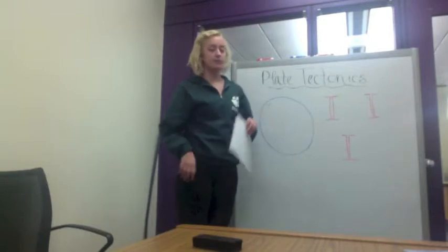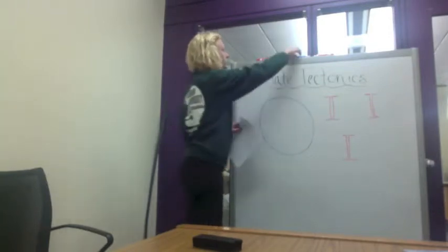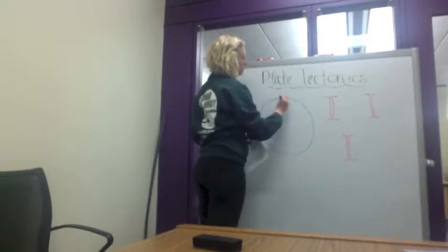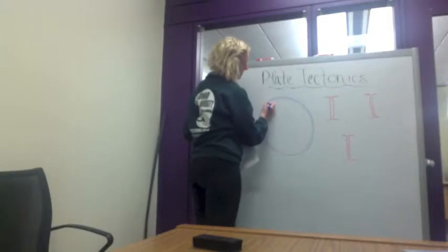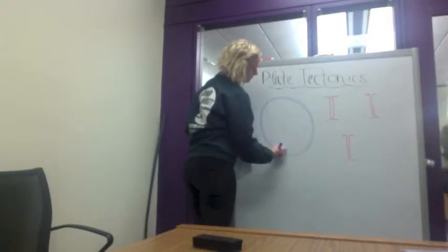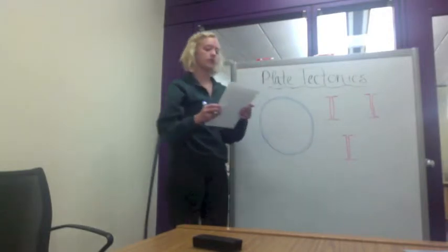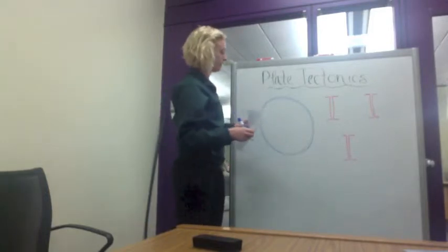First we'll start by discussing the layers of Earth, of which there are four. The outermost layer is known as the crust. This is the Earth on which we stand. This layer is actually only about 10 miles deep and consists of many different types of rocks. It is the outermost part of the Earth.